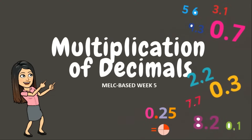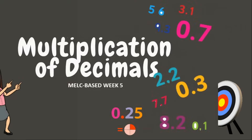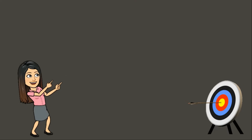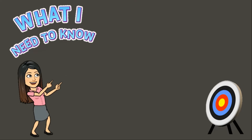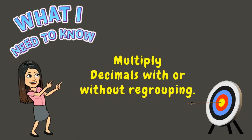Multiplication of decimals. Good day students, welcome back to my classroom. For today's lesson you are going to learn how to multiply decimals with or without regrouping. Let us start. Let's have this first example: 32 hundredths times 3 tenths.